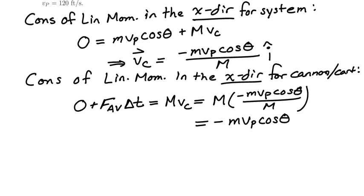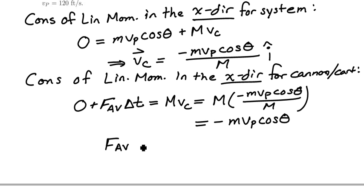Which means that the average force acting on the system over this interval of time will be given by minus little m vp times the cosine of the angle theta, divided by the elapsed time delta t. And with that, you should be good to go. Best of luck as you plug in numbers and evaluate these forces and velocities.